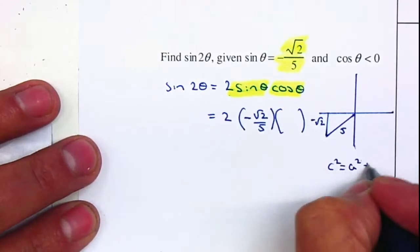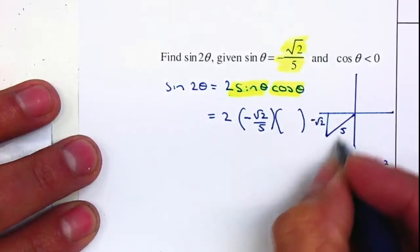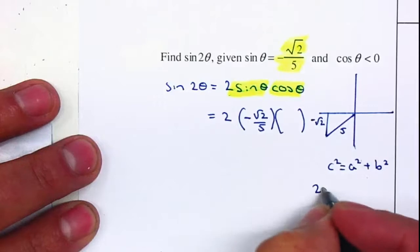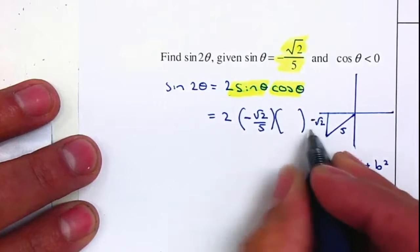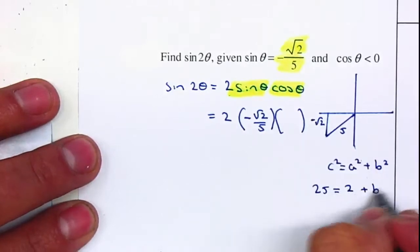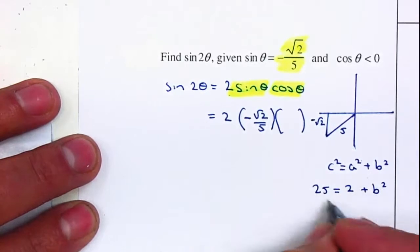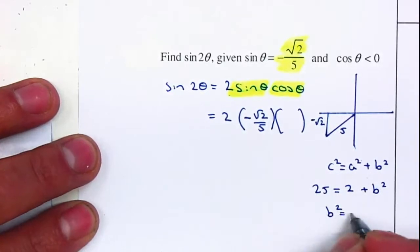c² equals a² plus b². c is 5 squared is 25, equals a is the square root of 2 squared is just 2, plus b². Minus 2 on both sides gives me b² equals 23.